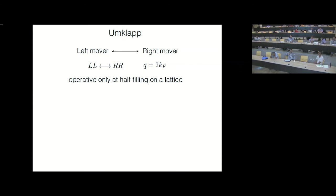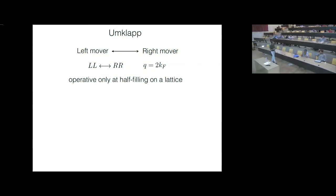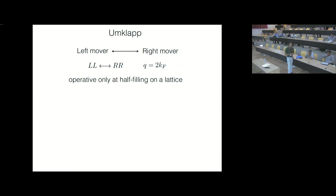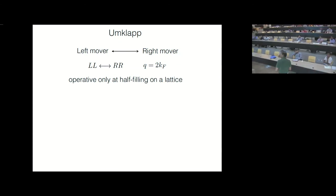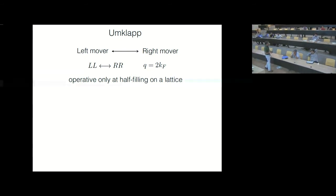Remember that what was important here was having a lattice to break Galilean invariance. The lattice can have a non-trivial effect even when you don't have a boost. For spinless fermions, if you have the right filling, the effect of a lattice can allow a process where two left movers become two right movers or vice versa — momentum is now conserved only modulo a reciprocal lattice vector — and this is called umklapp. This is operative only at half-filling on a lattice.